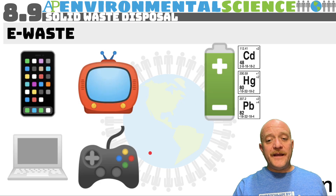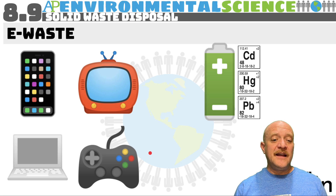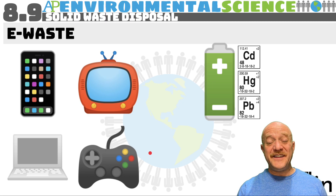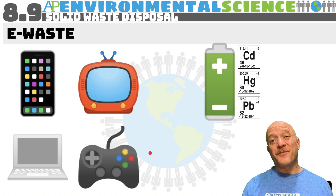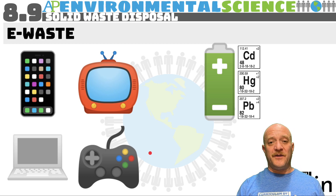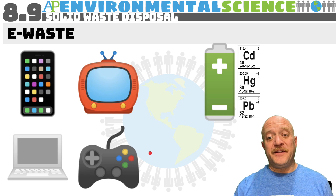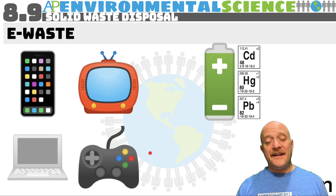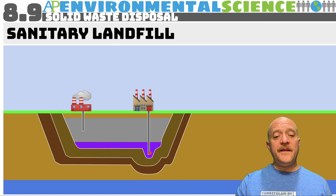E-waste is a major problem due to the planned obsolescence of items like smartphones, gaming consoles, and TVs — new phones come out every year. The problem is that metals are present in these devices, including gold in the motherboard and hardware. There are also heavy metals like cadmium, mercury, and lead in the batteries, which are endocrine disruptors and very toxic if they get into waterways.